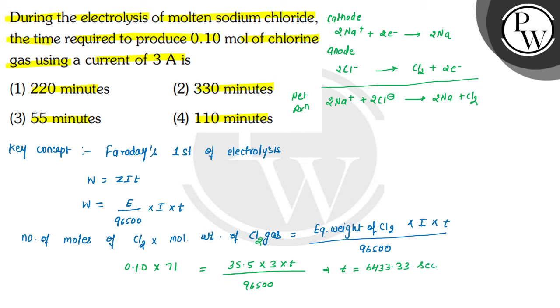In the options we have minutes, so we will calculate this value in minutes. How much is it in minutes? We have 60 seconds, so we will divide it by 60.